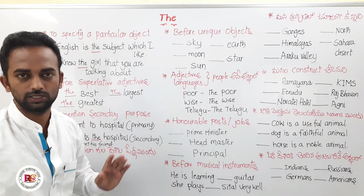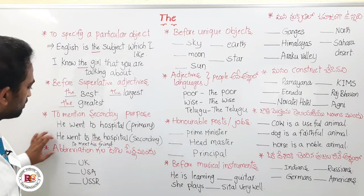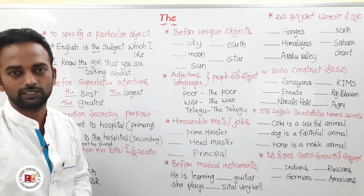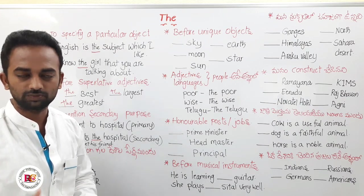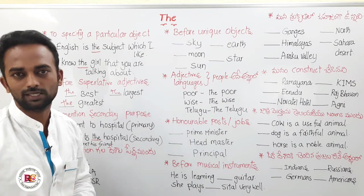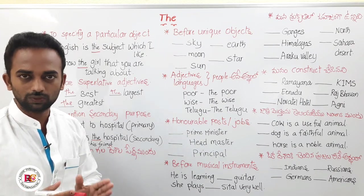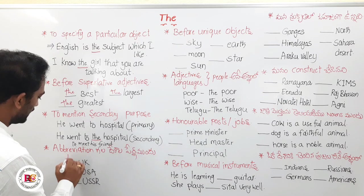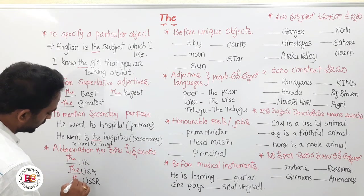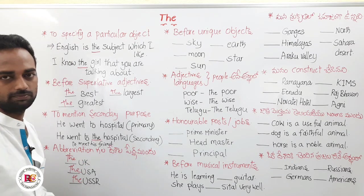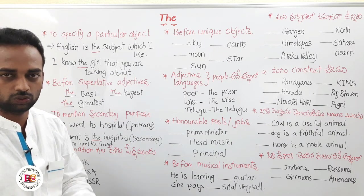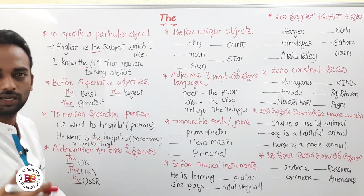The fourth point: we use 'the' before abbreviations of country names. For example: we live in the UK — United Kingdom; the USA — United States of America; and the USSR. So before abbreviations of country names, we use 'the'.